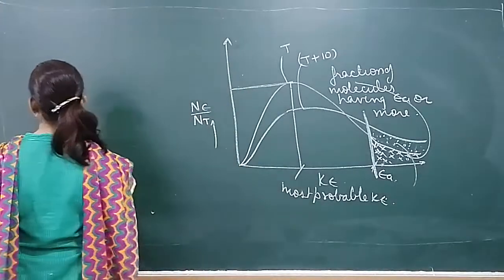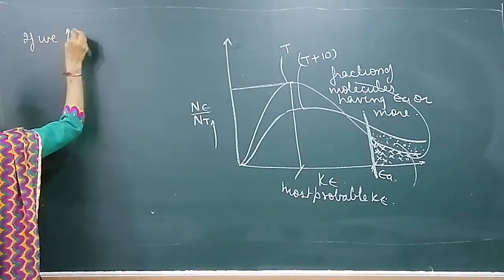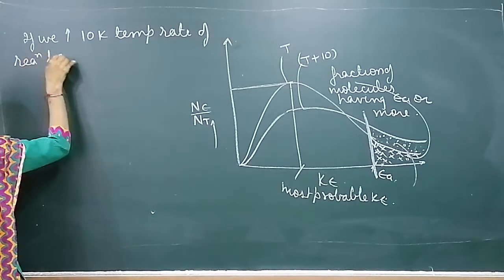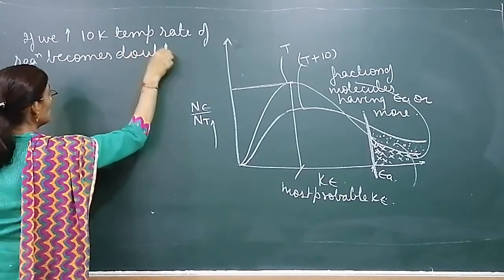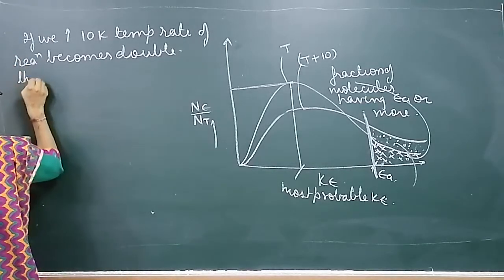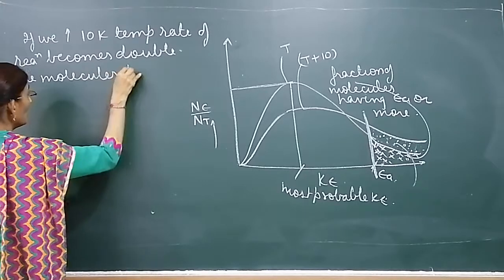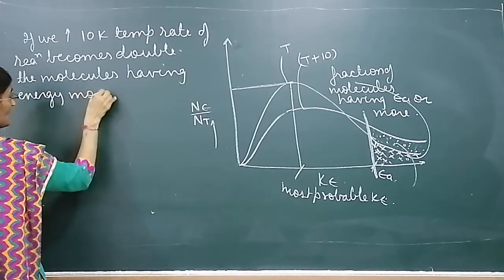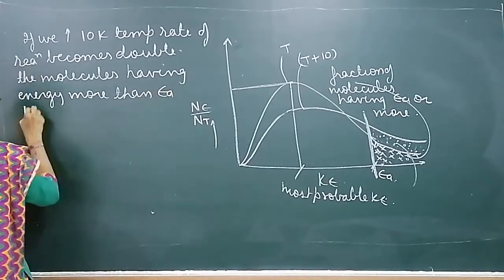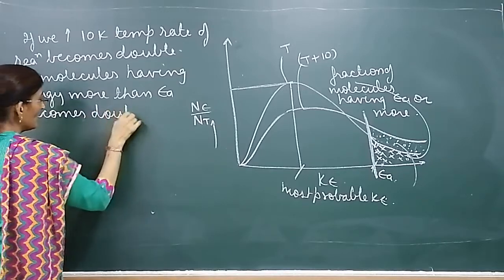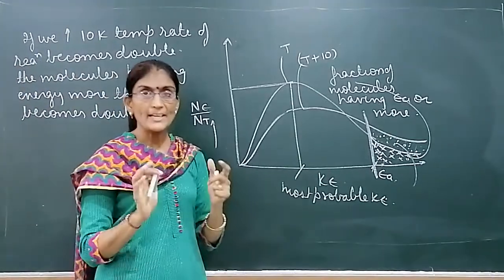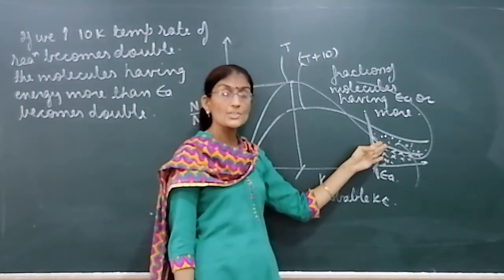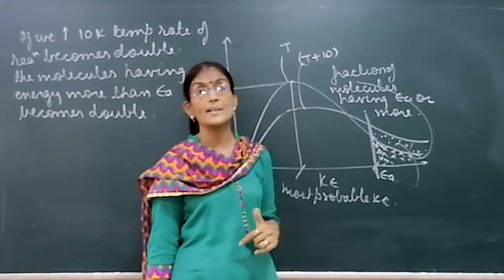Why on increasing just 10 Kelvin in temperature does the rate of reaction become double? Because the molecules having energy more than activation energy becomes double. The fraction of molecules possessing kinetic energy which is more than activation energy becomes double, and hence the rate of reaction becomes double.